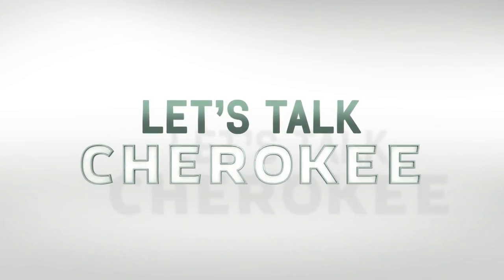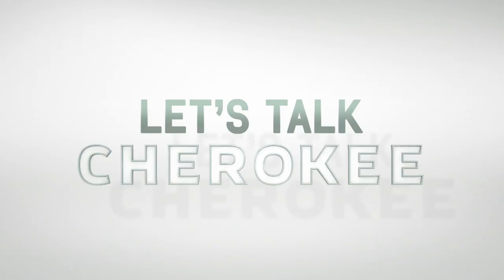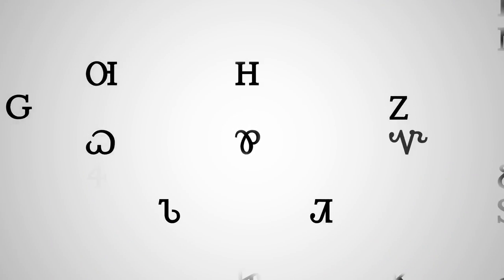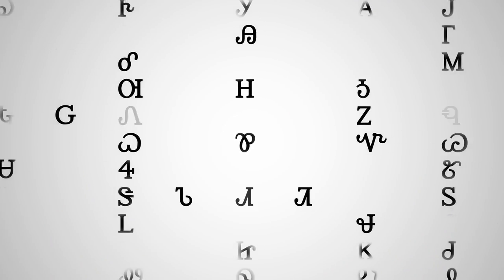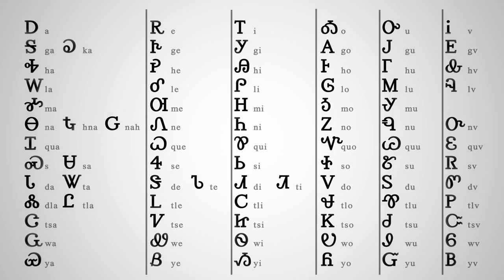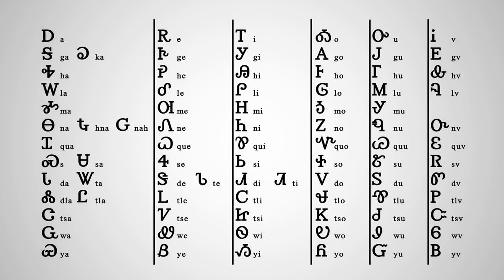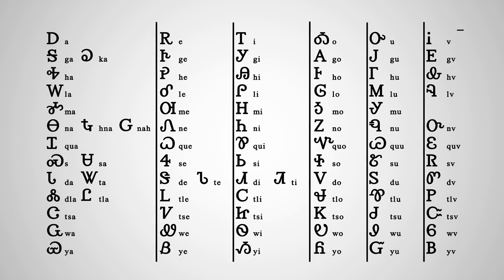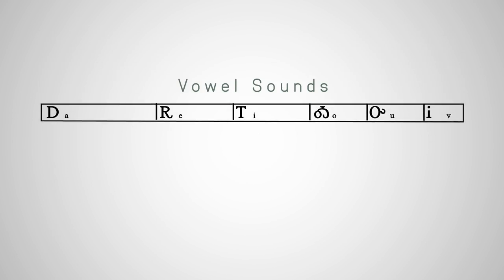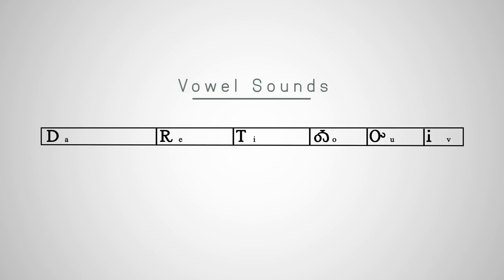Let's talk Cherokee. The Cherokee syllabary is the writing system invented by Sequoia. Each character represents a syllable in the Cherokee language. In this syllabary chart, the top row contains the six vowel sounds.